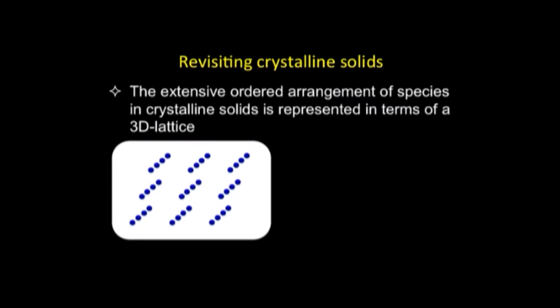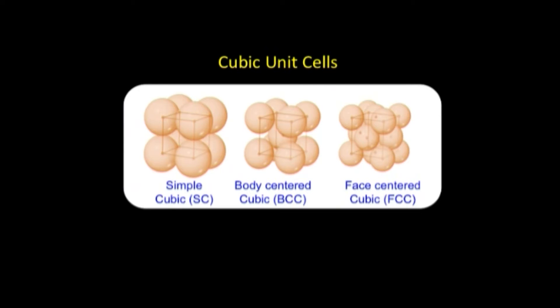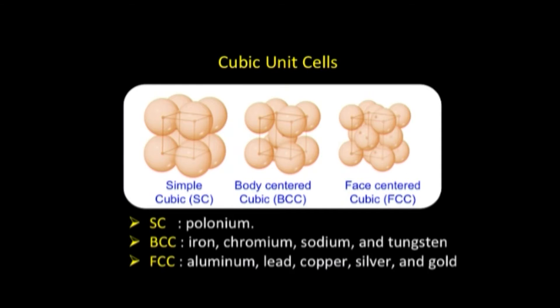Any crystalline solid can be expressed in terms of a three-dimensional lattice generated by repeating a unit cell in all three dimensions. For cubic unit cells there are three possibilities: simple cubic, BCC, and FCC. In the context of metallic solids, polonium crystallizes in simple cubic; iron, chromium, sodium, and tungsten adopt BCC; and aluminium, lead, copper, silver, and gold take up FCC structures.